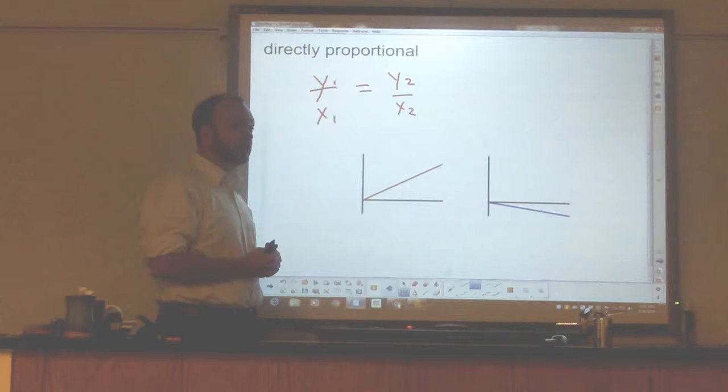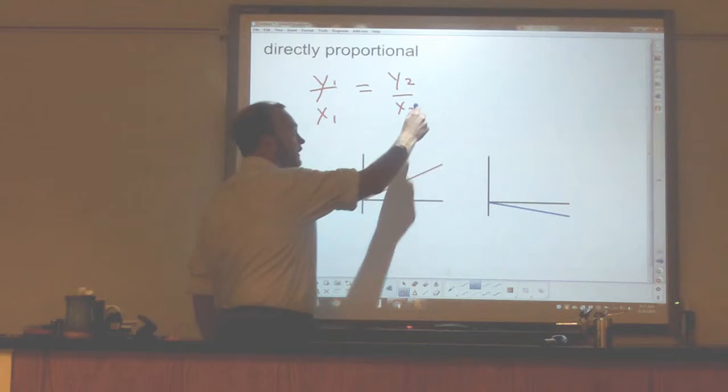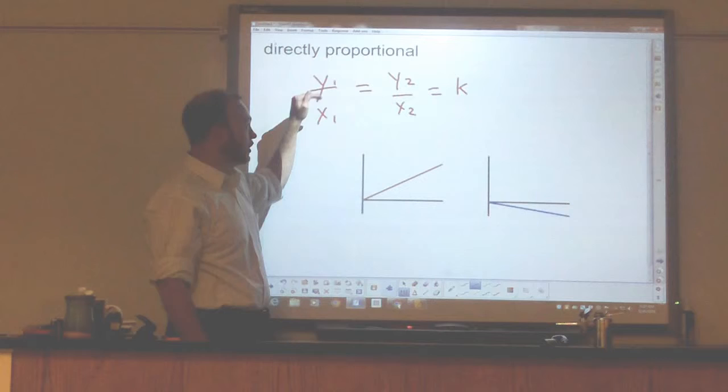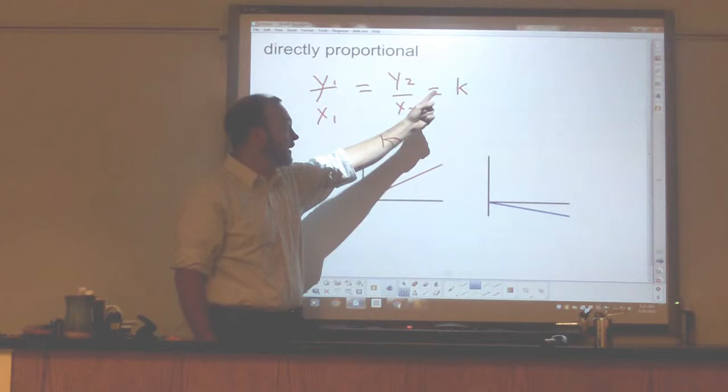So if I take y1 and I divide it by x1, I'm going to get some number. If I take y2 and I divide it by x2, I'm going to get that same number. When I look at their ratio, or if I look at them as a proportion, I'm always getting the same value. We say they are directly proportional.